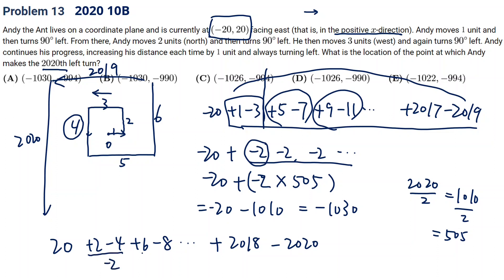It's going to be negative 2, negative 2. How many negative 2 are there? Same. It's 505. So 505 times negative 2, still negative 1,010. Plus the initial 20, it's going to be negative 990.